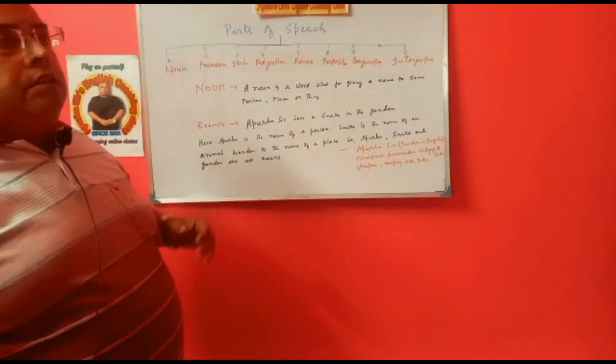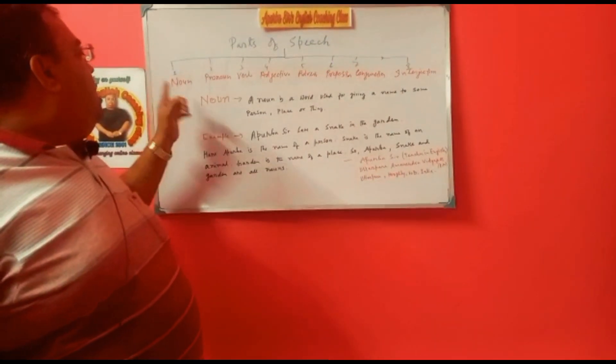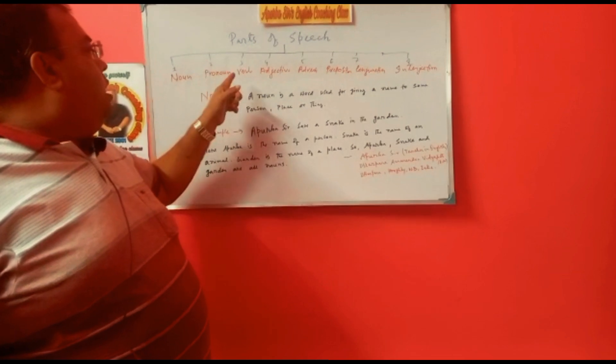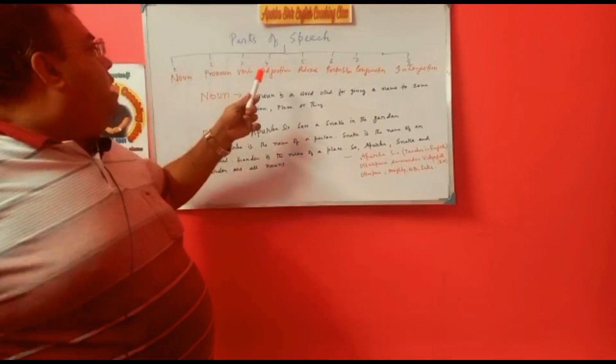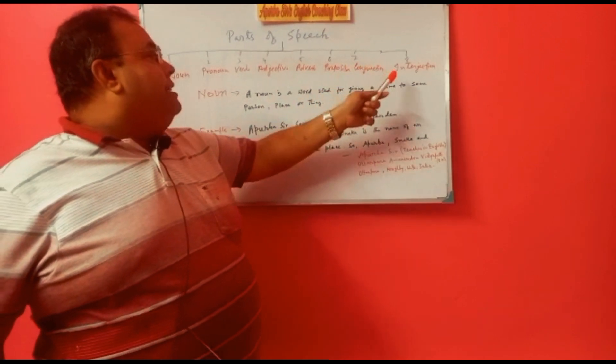Parts of speech. There are eight kinds of parts of speech namely noun, pronoun, verb, adjective, adverb, preposition, conjunctions, and interjections.